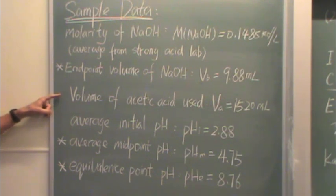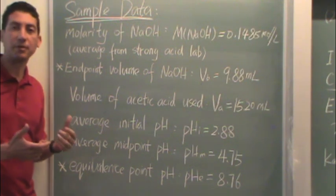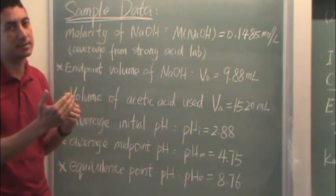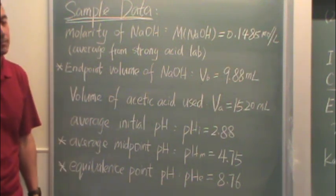The volume for the acetic acid used, this is from the burette that has the acetic acid. And this would just be the final minus initial. It should be around 15 milliliters.